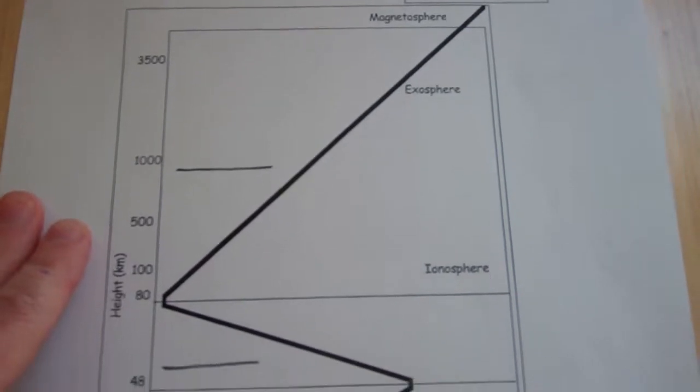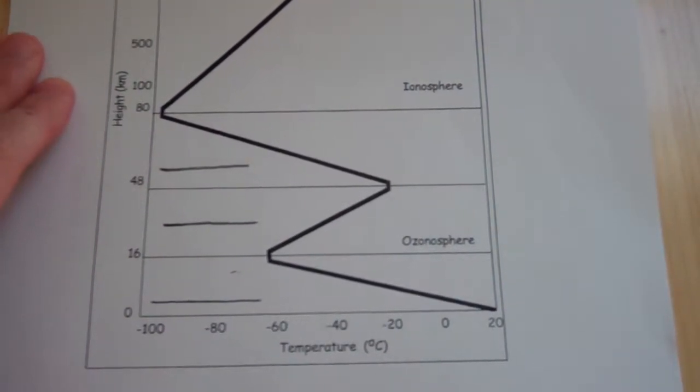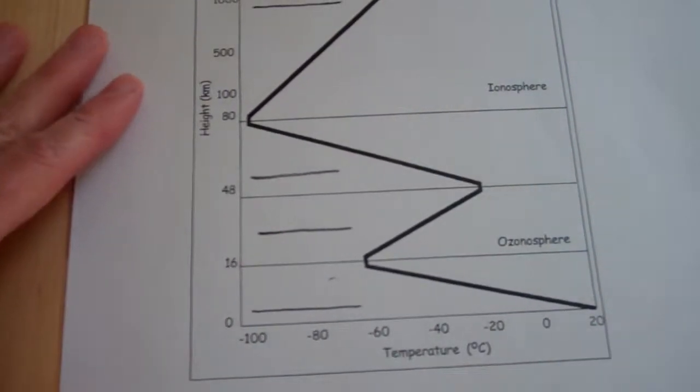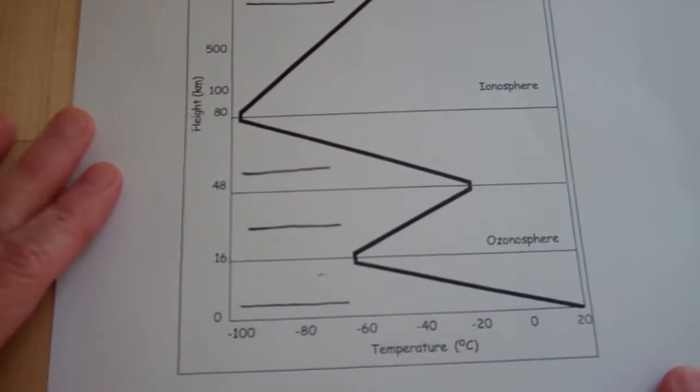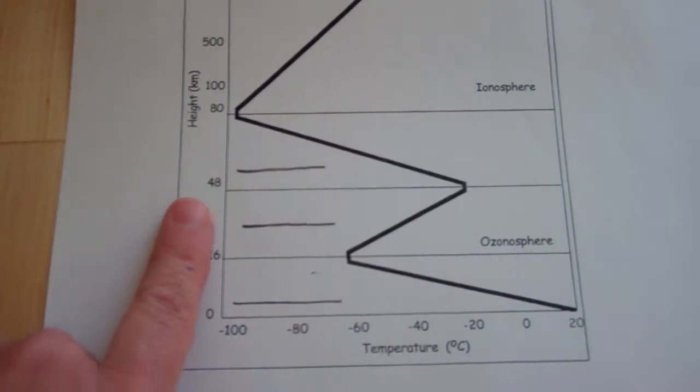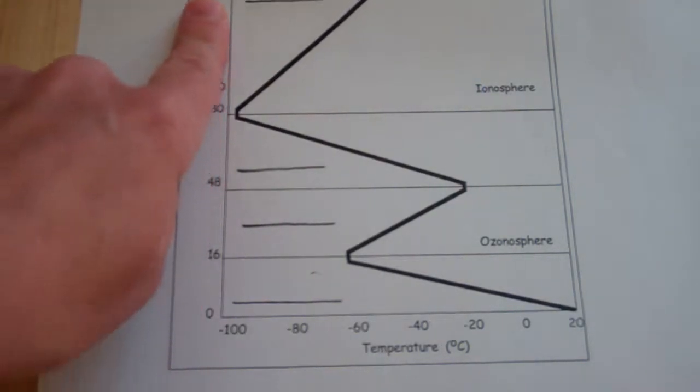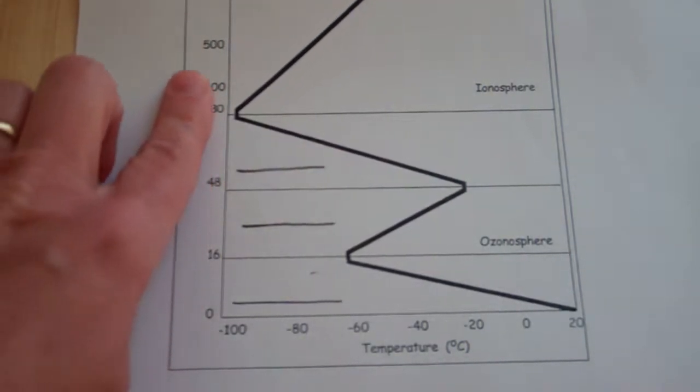atmosphere and we labeled it in class. If you look at this graph, the x-axis is temperature and as you go this way it gets hotter and hotter, colder and colder. This is altitude or height. So we're increasing in altitude as we go up the y-axis.